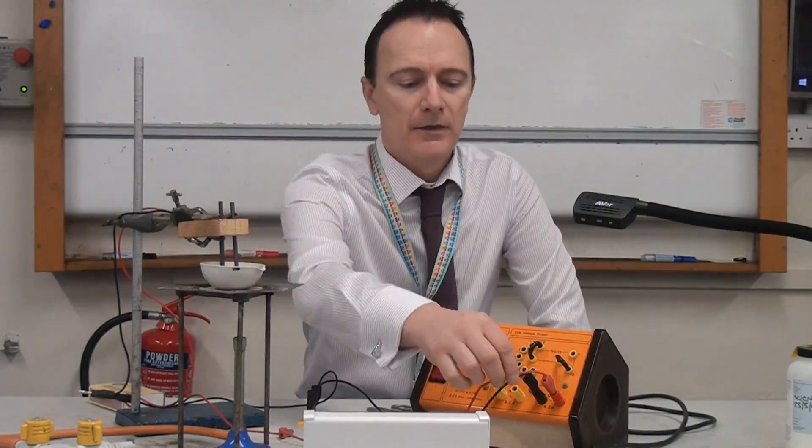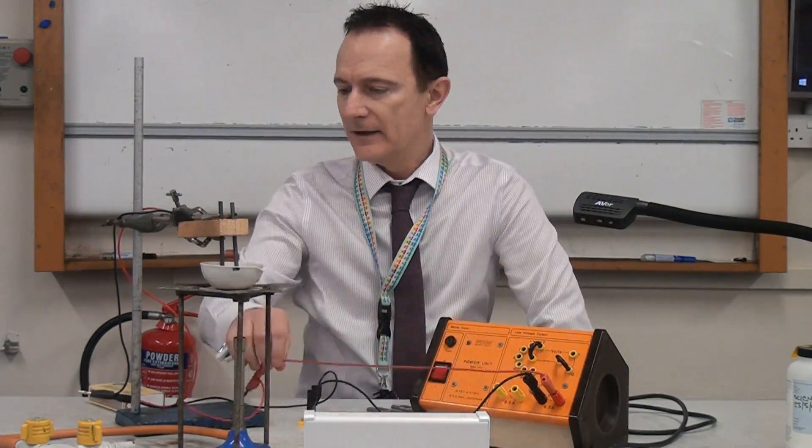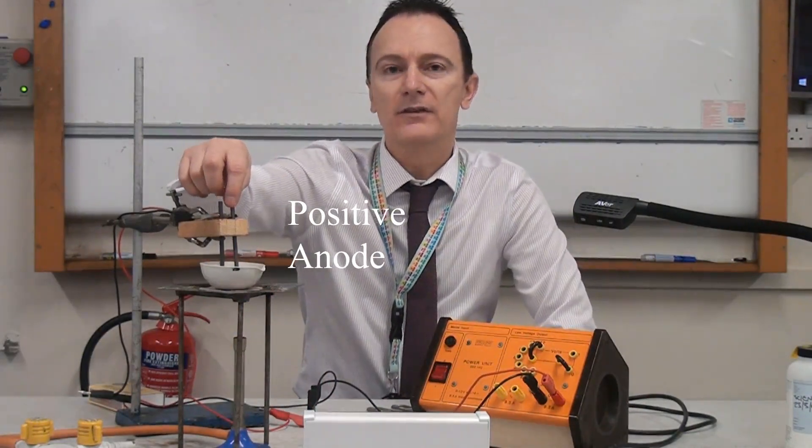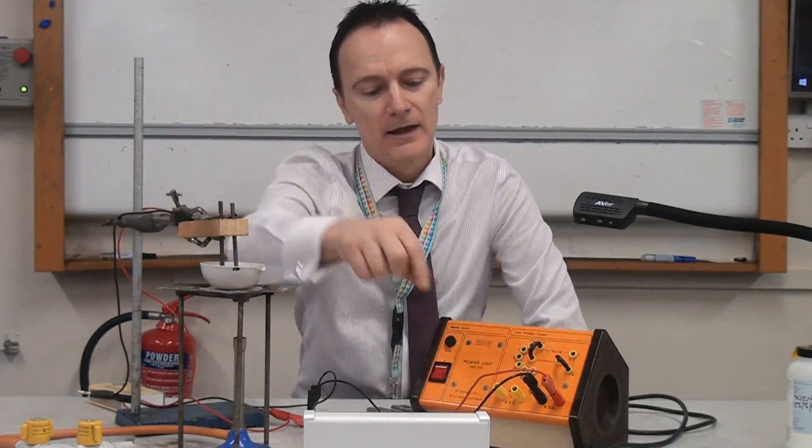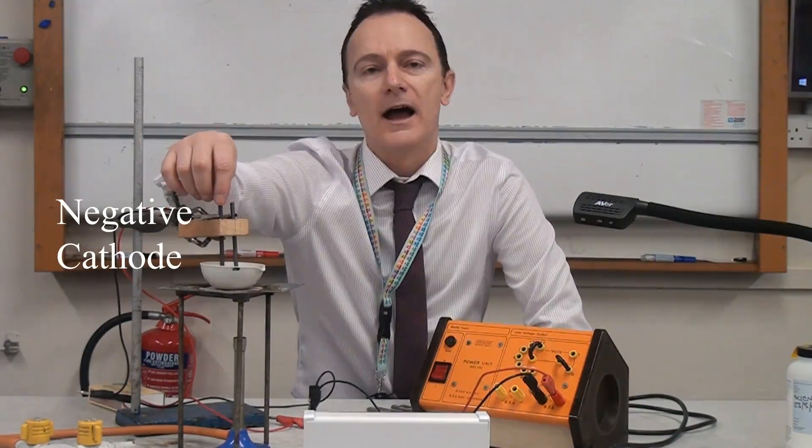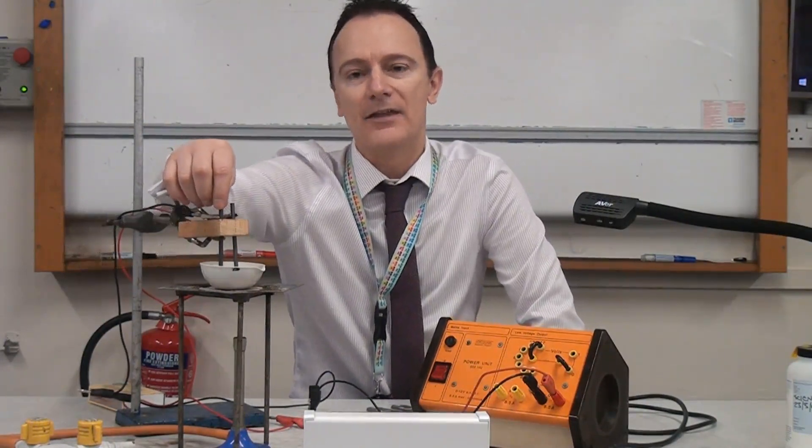So what I've got here is the power pack. The positive side is connected to an electrode here and we call this positive electrode the anode. The negative side is connected to another carbon rod and that is called the negative cathode.